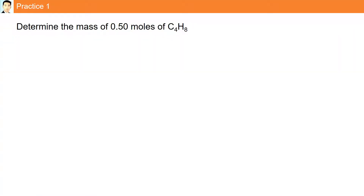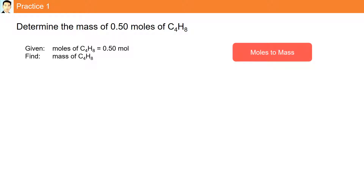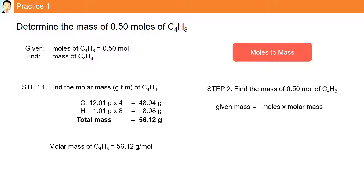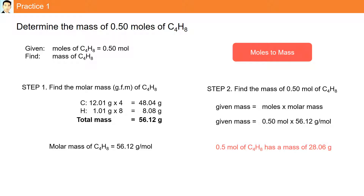Practice question: determine the mass of 0.50 moles of C4H8. We are given the number of moles and we are asked to find the mass — going from moles to mass. The first step is to find the gram formula mass of C4H8, which is 56.12 grams per mole. The second step: using the formula, mass equals moles multiplied by molar mass. 0.5 multiplied by 56.12 gives us 28.06 grams.